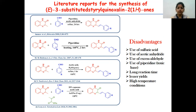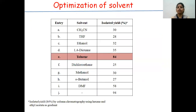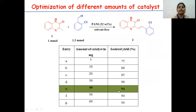In light of these facts, to address these challenges, we wished to explore the use of polyaniline as a heterogeneous organocatalyst for the synthesis of styryl quinoxalinones. In this direction, we carried out the reaction between 3-methyl quinoxalinone and aldehyde in the presence of polyaniline. The reaction was performed both in the presence and absence of solvents. Delightfully, it was found that the reaction under solvent-free conditions gave the best yield. Various amounts of catalyst were also screened, and 4 mg of polyaniline gave the best yield.